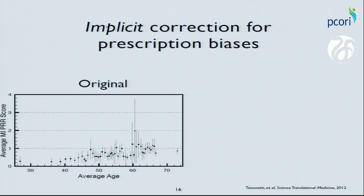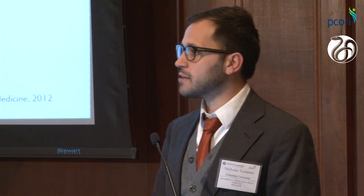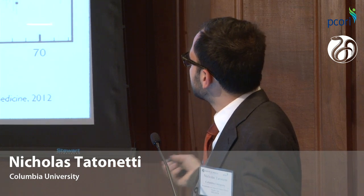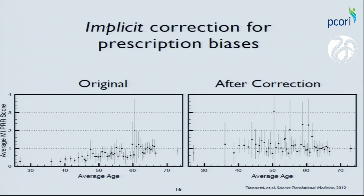It not only works for things included in the model. We included indications, so we'd expect it to work in that scenario. But it also works for implicitly correcting other biases such as age. As patient cohorts who take a particular drug get younger, they are less likely to be associated with myocardial infarction — not because of the drug, but because younger patients have fewer MIs. After applying our method, we remove that relationship and the age bias is corrected.